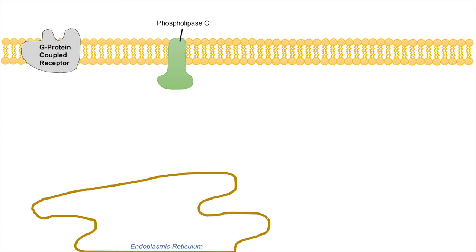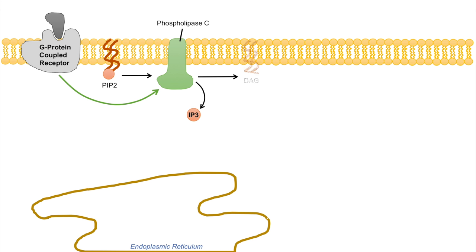Here is the cell membrane with a G-protein coupled receptor and a phospholipase C. When the cell is presented with a ligand that binds to the G-protein coupled receptor, the receptor becomes activated, leading to the activation of phospholipase C. Phospholipase C is an enzymatic reaction that involves phospholipids, and it acts on PIP2 — it is the enzyme responsible for cleaving PIP2 in half into IP3 and DAG.